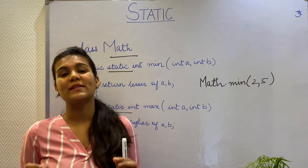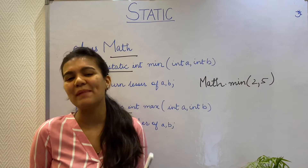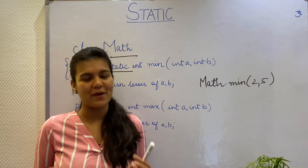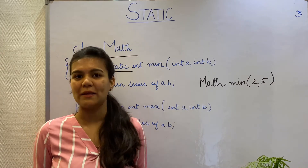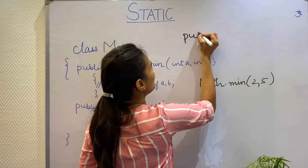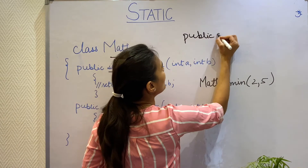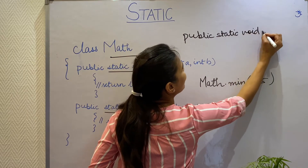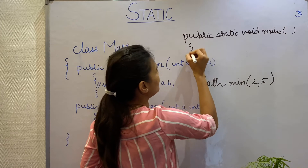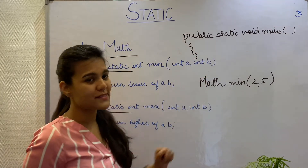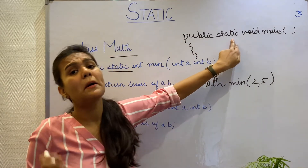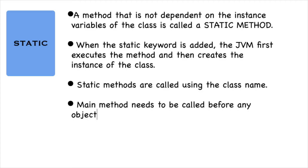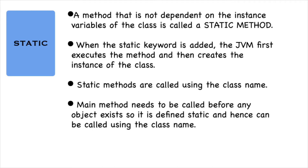The most common method with the static keyword is the main method. If you have done some programming, I'm sure you must have heard of the main method. Here you can notice that it has the static keyword because main is the first method that is called before any object exists, and the JVM does that by using the class name.